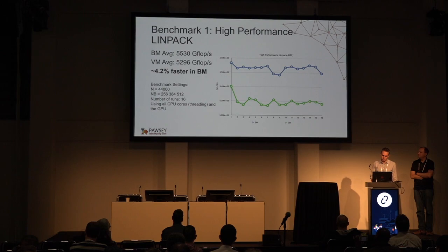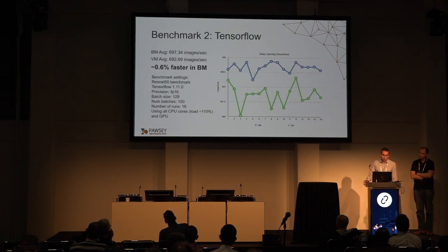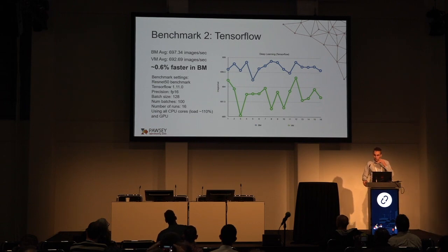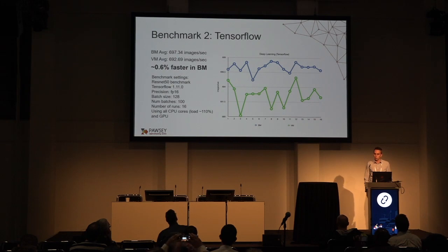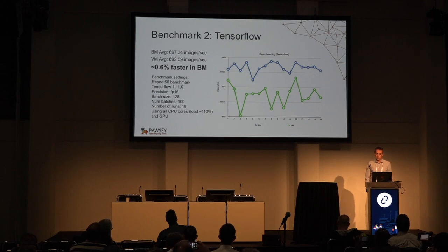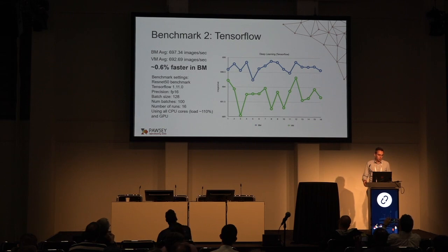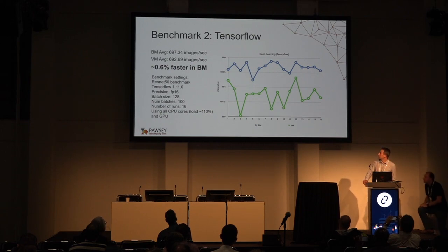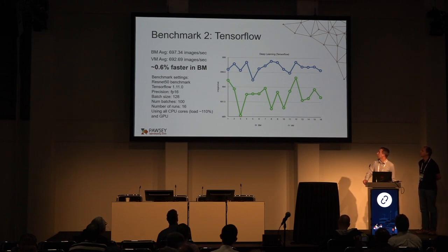The TensorFlow benchmark uses the ResNet-50 image classification model. TensorFlow is an open-source library for high-performance numerical computation. We see the bare metal machine is only 0.6% faster than the VM — quite a good result. Looking at the number of runs, the performances are very similar to bare metal.